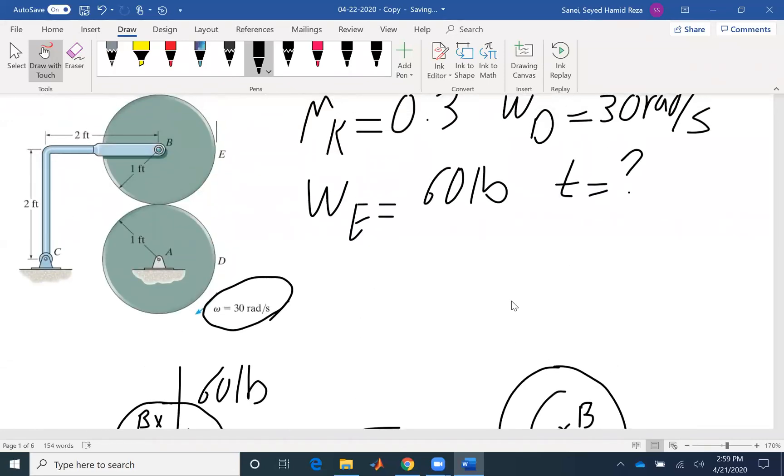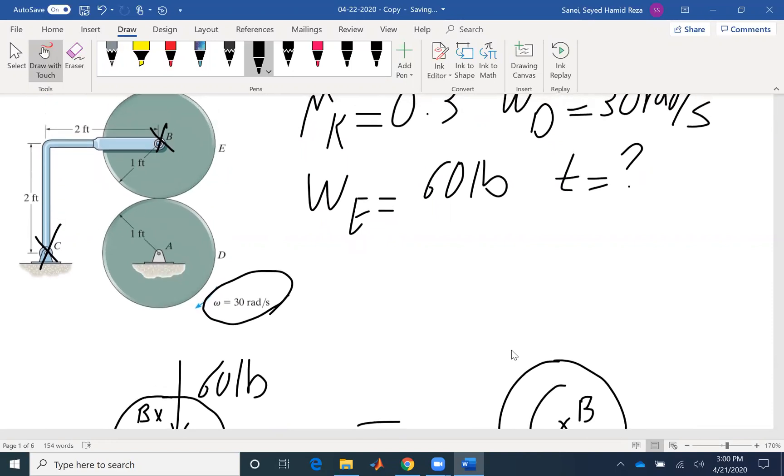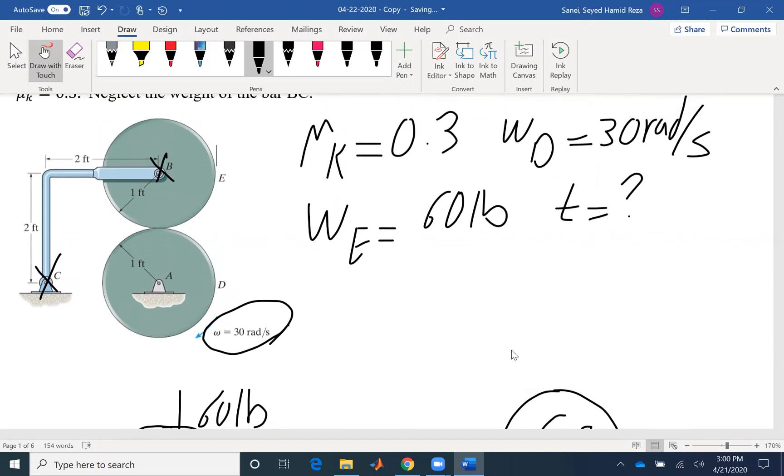If we go back to the problem, we see that rod BC is a two-force member because forces are only acting at point B and point C. The definition of a two-force member is a member that forces are acting only at two points on that member. It does not mean that it has only two forces, but at two points the forces are acting.